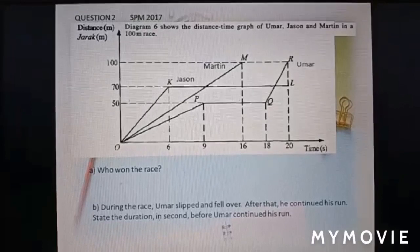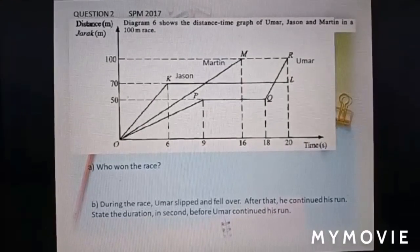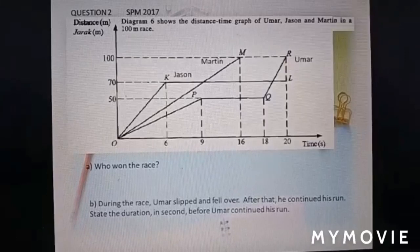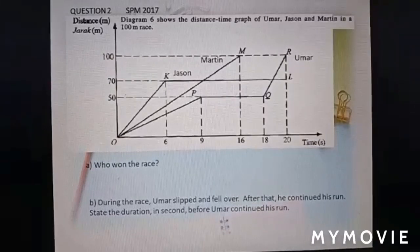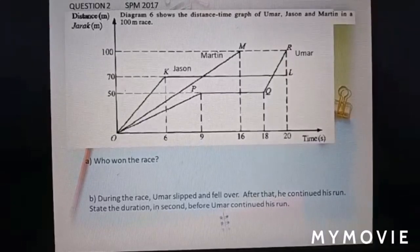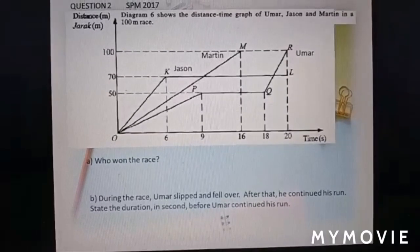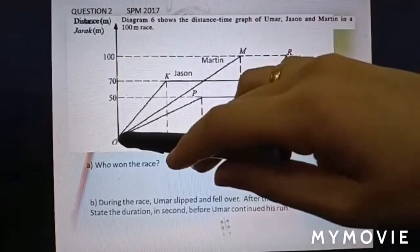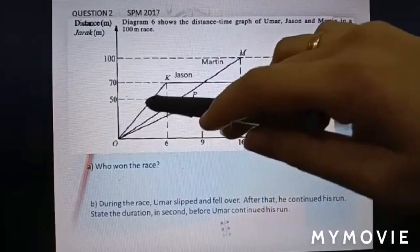Question number 2 is SPM past year question 2017. Diagram 6 shows the distance-time graph of Umar, Jason and Martin in a 100 meter race. Who won the race? Okay, we look at the diagram one by one here. First is Jason.